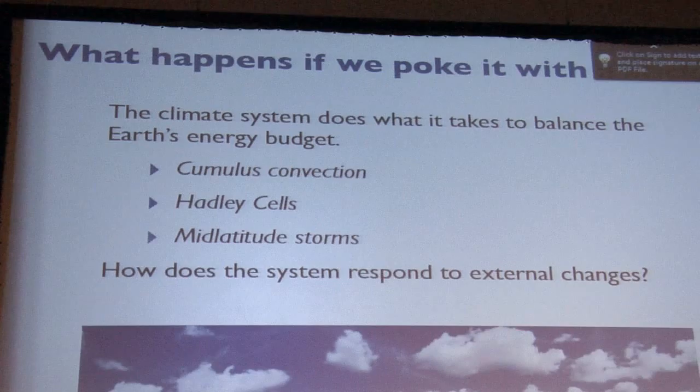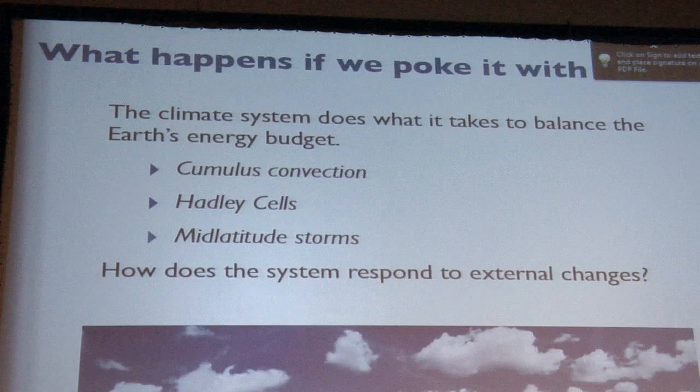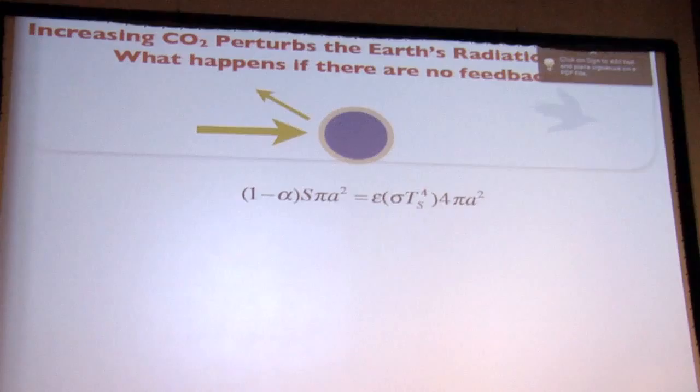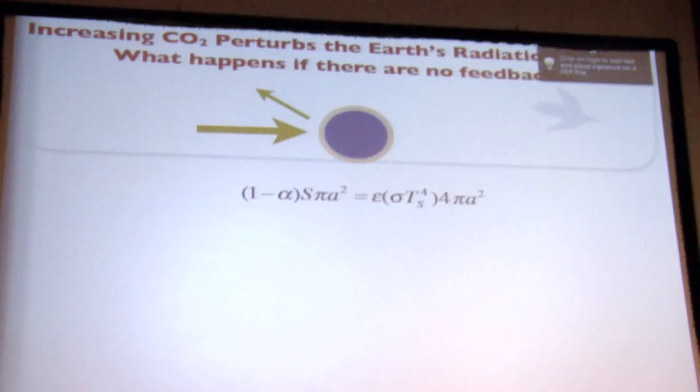So, let's talk now a little bit about climate change. Let me check my time. What happens if we poke the system with a stick? The word stick is covered up here. Poke it with a stick. The climate system, as I've just explained, does what it takes to balance the Earth's energy budget. That's kind of the job of the climate system. And, it does that by making cumulus clouds and the Hadley circulation and mid-latitude storms. What happens if we perturb the system? For example, by adding CO2. So, we're going to go now through climate change on the back of an envelope. And, part of the point here is to show you that you don't need a big computer model to understand the basic idea. And, there are some equations with numbers on the next two slides. So, I apologize in advance.